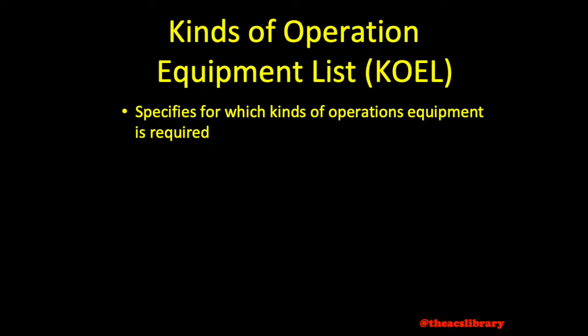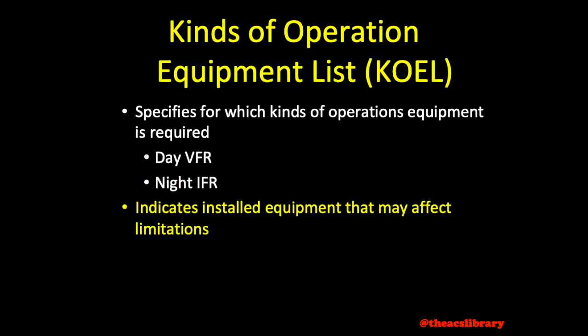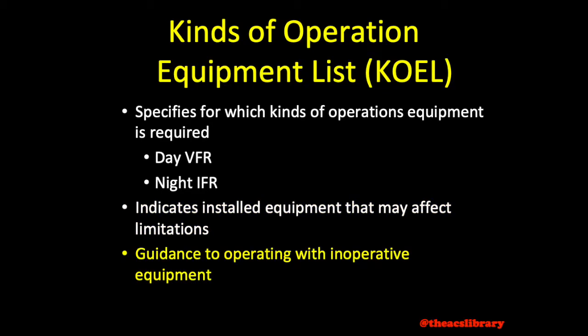Examples of kinds of operations include day VFR or night IFR, etc. The kinds of operations equipment list also indicates any installed equipment that may affect operating limitations, and may contain guidance to operating the aircraft with certain equipment and instruments inoperative.